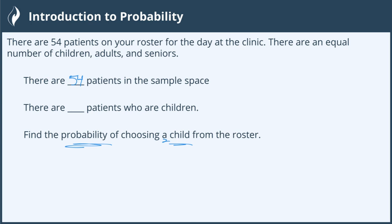Now, due to the fact that there are an equal number of children, adults, and seniors, that means if we divide 54 by 3, we know that there are 18 children, 18 adults, and 18 seniors. So there are 18 patients who are children.